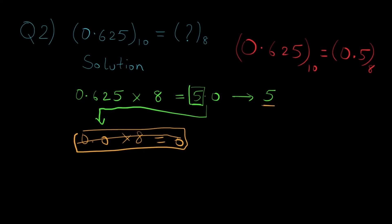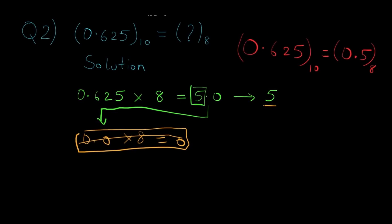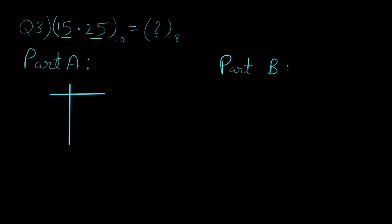Now let's move on to the next question which is the combination of the first and second question. So we divide this sum into two parts, part A and part B. In part A we'll be converting the integer part 15 to octal number system, and in part B we'll take care of the fractional number.